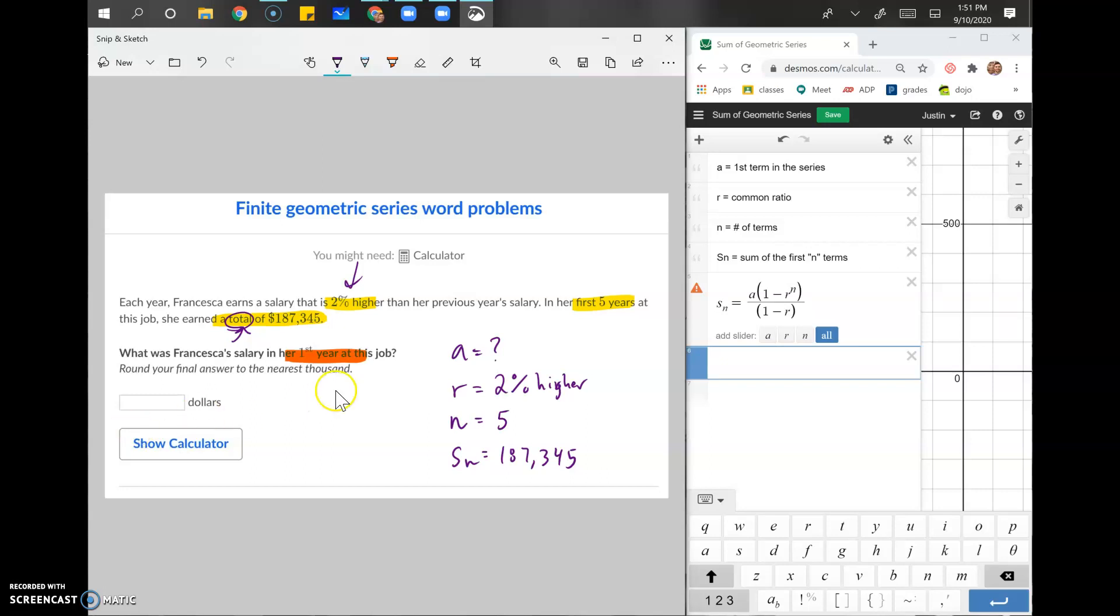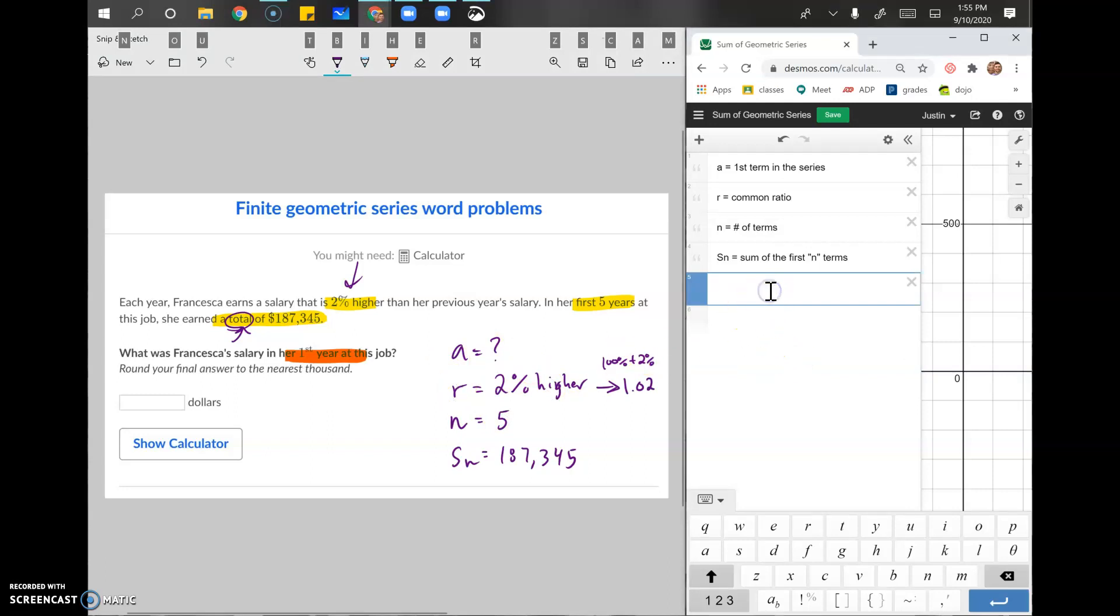All right. So now let's replace what we know in the formula. We've got to convert real quick, 2% higher. So again, 2% higher will be 100% plus 2%. 100% as a number is one and 2% is 0.02. And now we got a question that's a little bit different than we've got. So we've got 187,345 equals fraction. We don't know a, so I'm going to leave a right now. 1 minus the ratio 1.02 to the power of five. Close that parentheses. And we've got one minus 1.02.